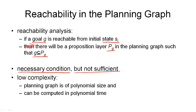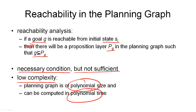The planning graph only gives us a necessary condition for goal existence: if the goal is not in the last proposition layer, there is no solution plan. The big advantage is low complexity — the planning graph is polynomial in size and can be computed in polynomial time. Each layer can contain at most all the propositions we have (a finite number), and with n layers that's n times the number of symbols — polynomial. In other words, we have a criterion for plan existence evaluable in polynomial time, but unfortunately it is only a necessary condition.